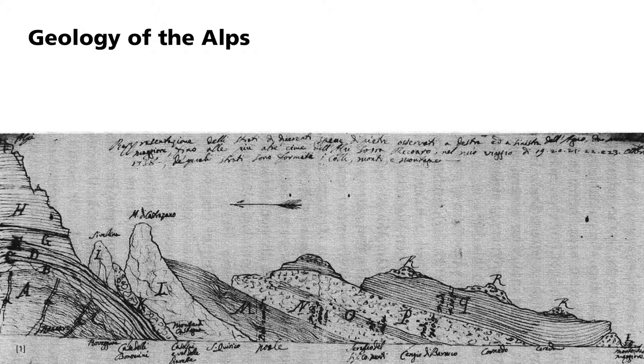In 1758, Giovanni Arduino sketched out this geological profile of the Italian Alp foothills. Over time, studies from different locations were combined, and a first impression of the structure of the Alps was obtained.